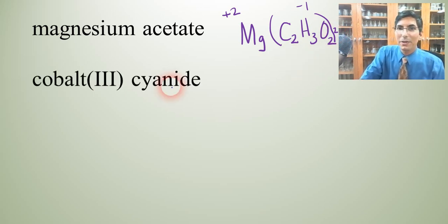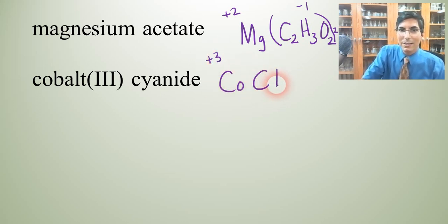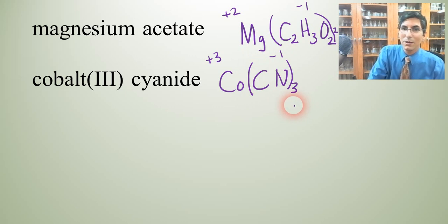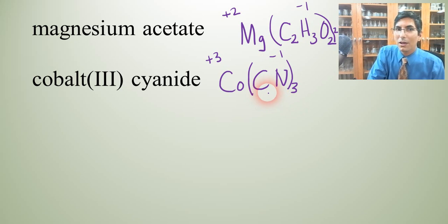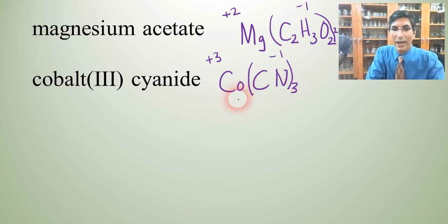The next example is cobalt(III) cyanide. Cobalt is Co with a plus 3 charge. Cyanide is CN with a negative 1 charge. We've got to swap them because those obviously don't cancel. So a 3 goes down here. And cyanide is a polyatomic ion, we've got to stick parentheses around that. So Co(CN)3. Do you see how many atoms are in a formula unit of cobalt(III) cyanide? We have 3 carbons, 3 nitrogens, and a cobalt. So that looks like it adds up to 7 total atoms there.